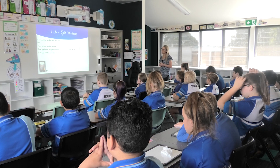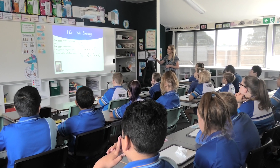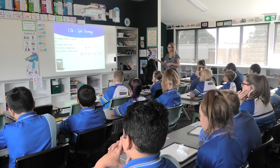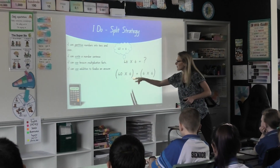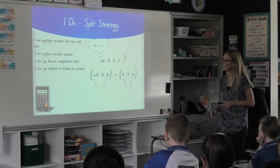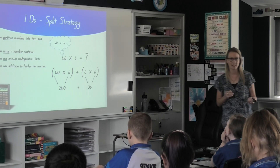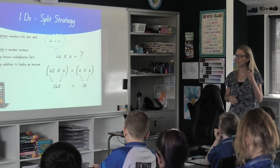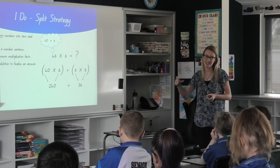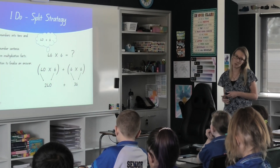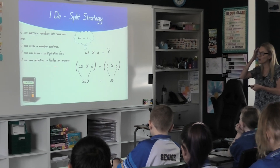Alright, let's have a look. I can partition numbers into tens and ones. So let's do this: 46 times 6. I'm going to do 40 plus 6 is 46. Now let's bring it down: 40 times 6 plus 6 times 6. Remember, the number we are multiplying by stays the same. We've got 40 times 6 in brackets — we do those first. 40 times 6: if that's too hard, I might just do 4 times 6, which is 24, and then add the zero. Then we add 6 times 6, which is 36. I've partitioned the numbers, written a number sentence, used known multiplication facts, and used addition to get our final answer.